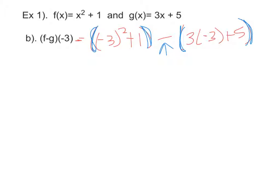Because of this minus sign, anytime you have that minus, you're going to have to distribute that minus to the second set. So make sure you pay attention to that. So negative 3 squared is a positive 9 plus 1, minus negative 3 times positive 3 is a negative 9 plus 5. Keep going.